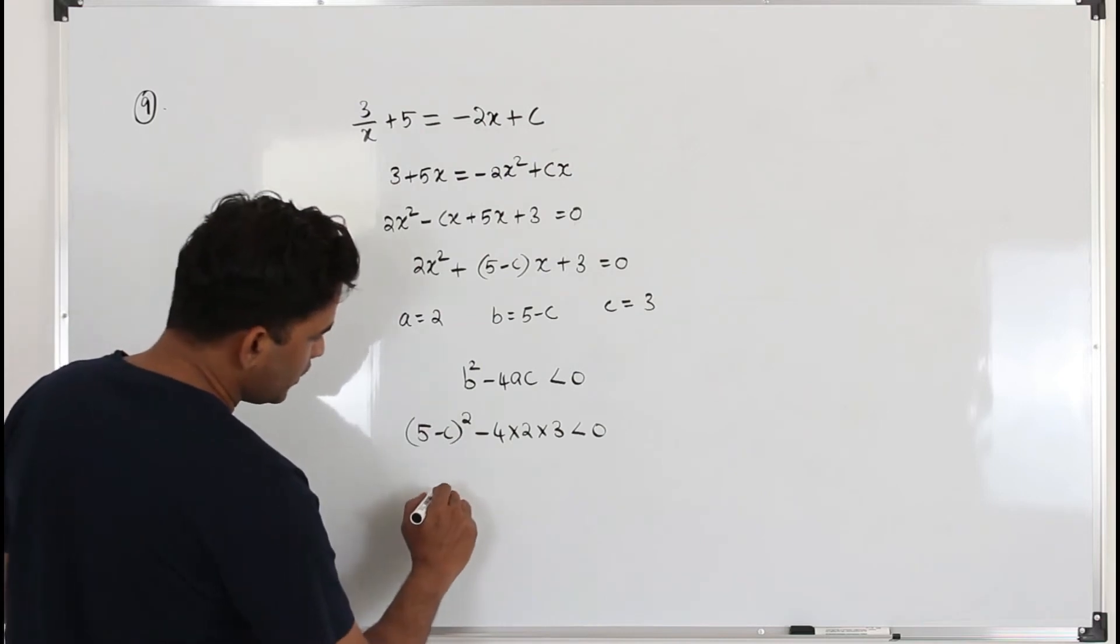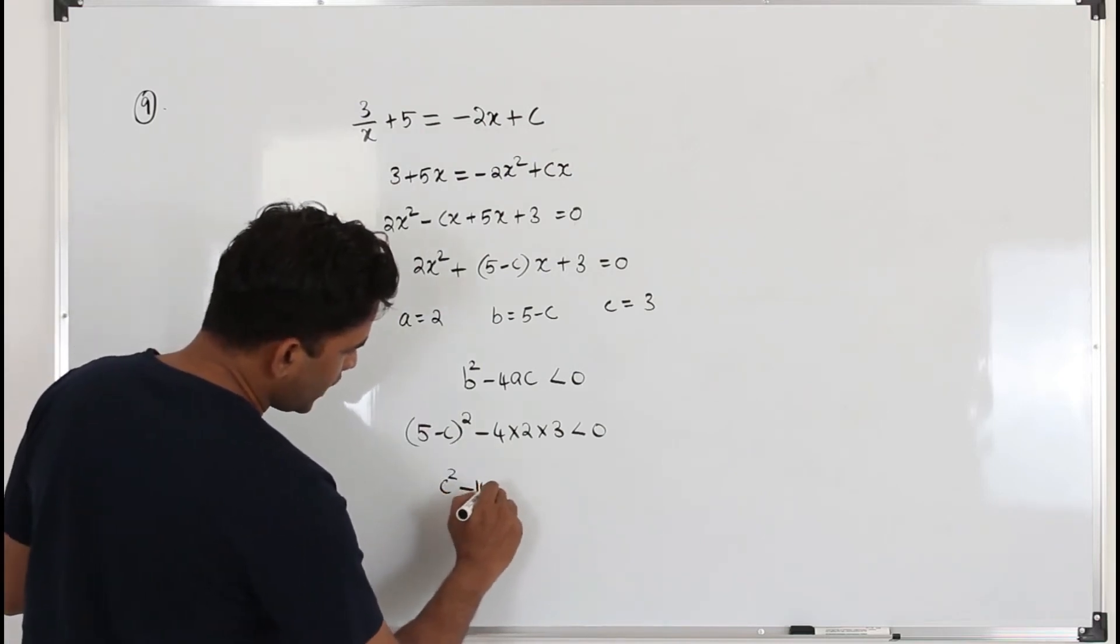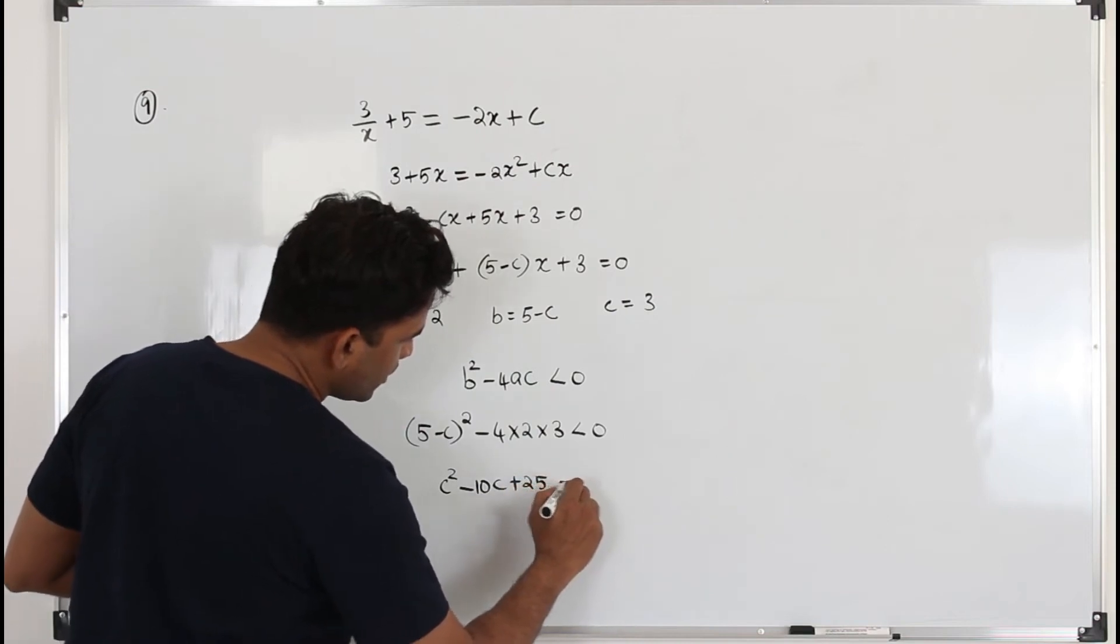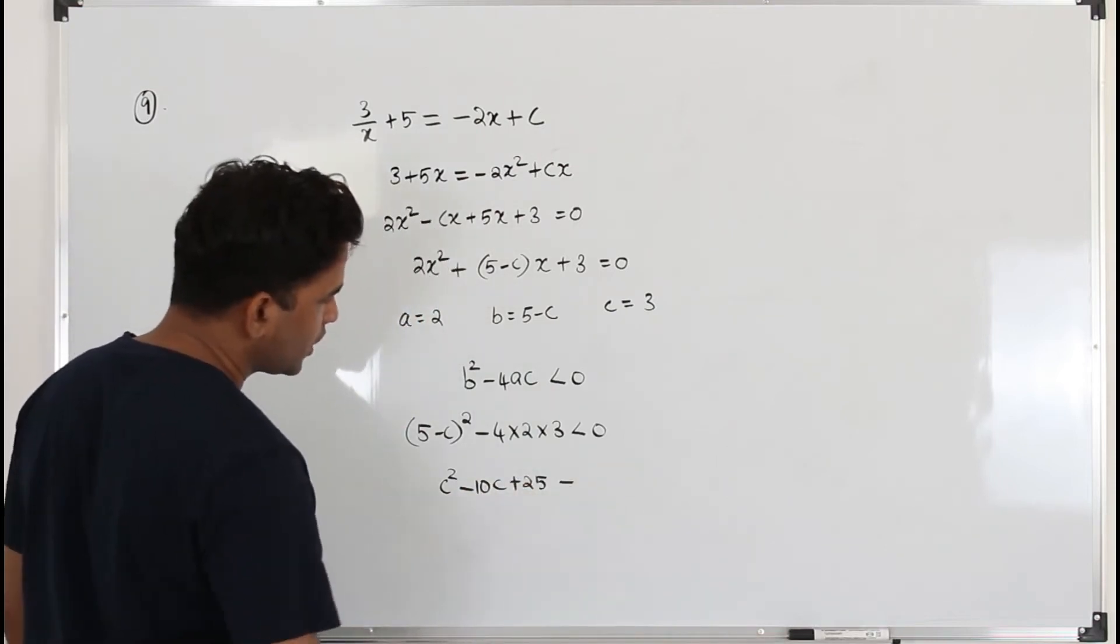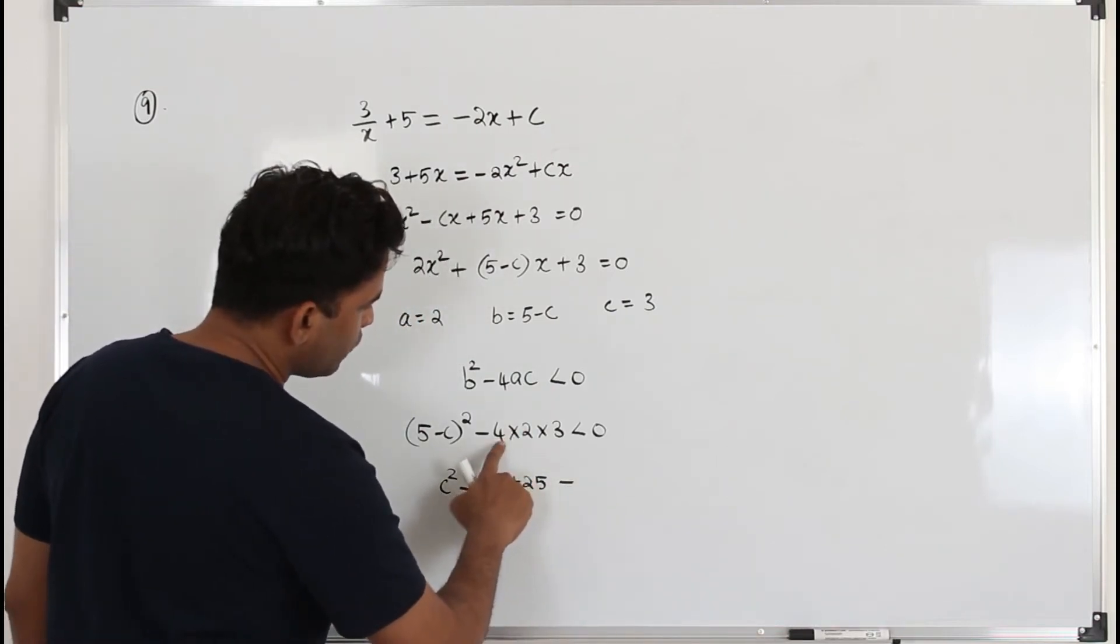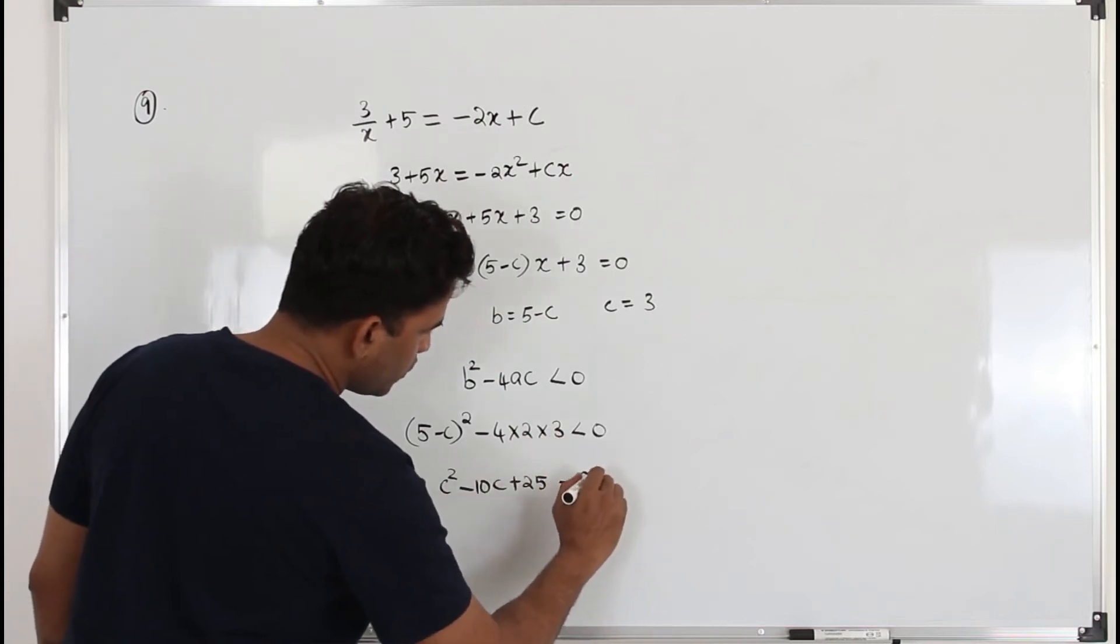So you expand this, you will get c² - 10c + 25 - 4 × 2 × 3, which is 24, is less than 0.